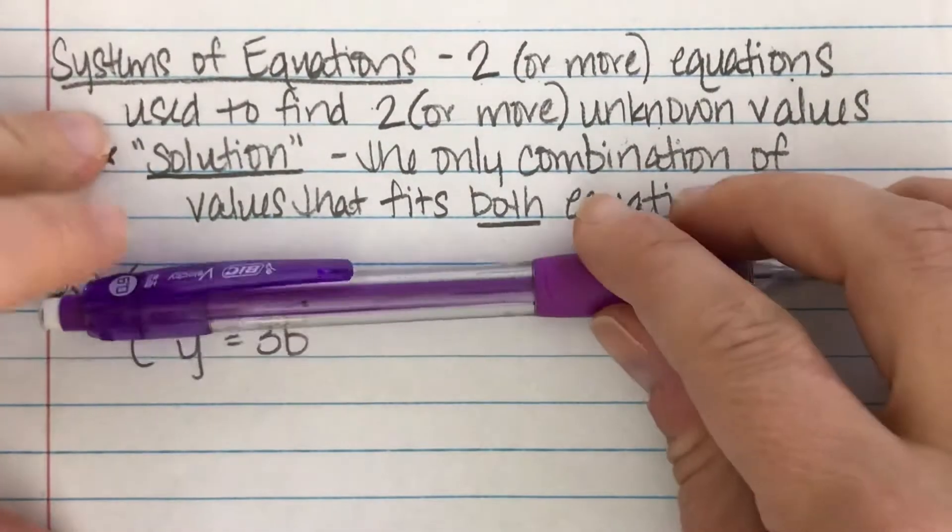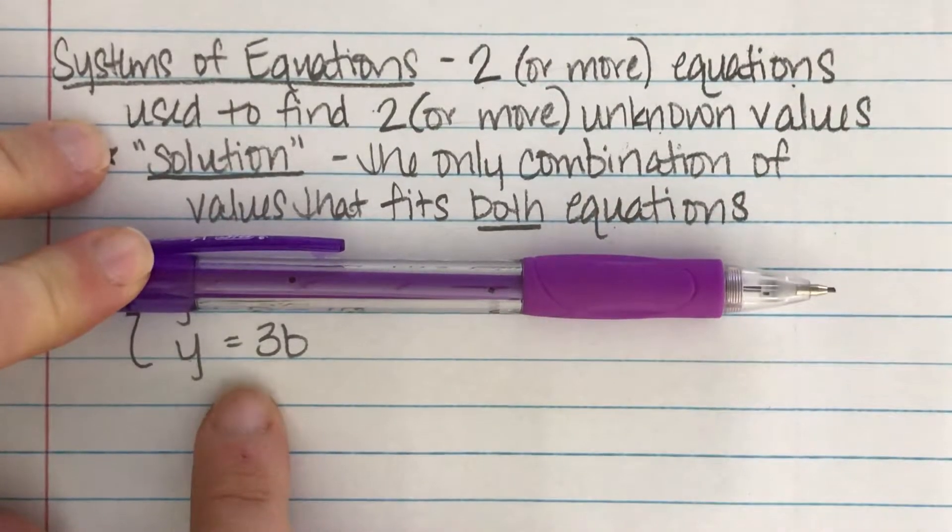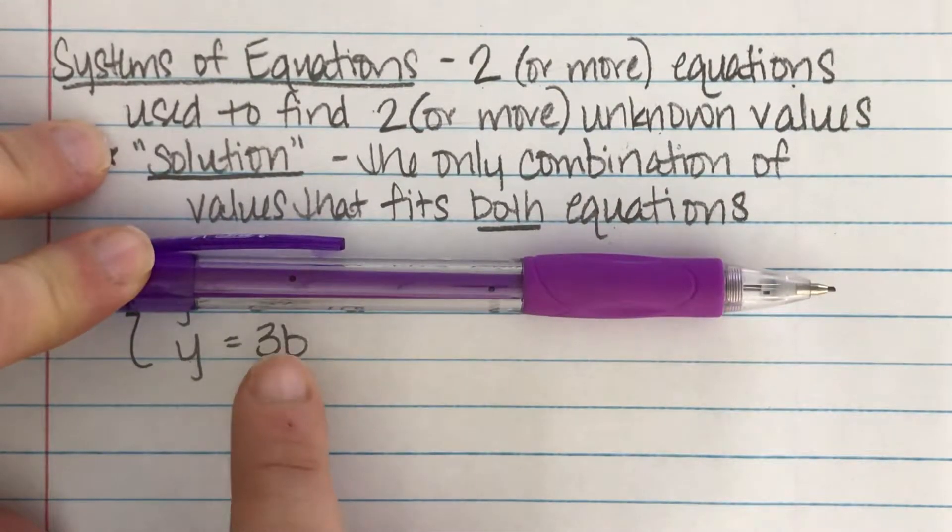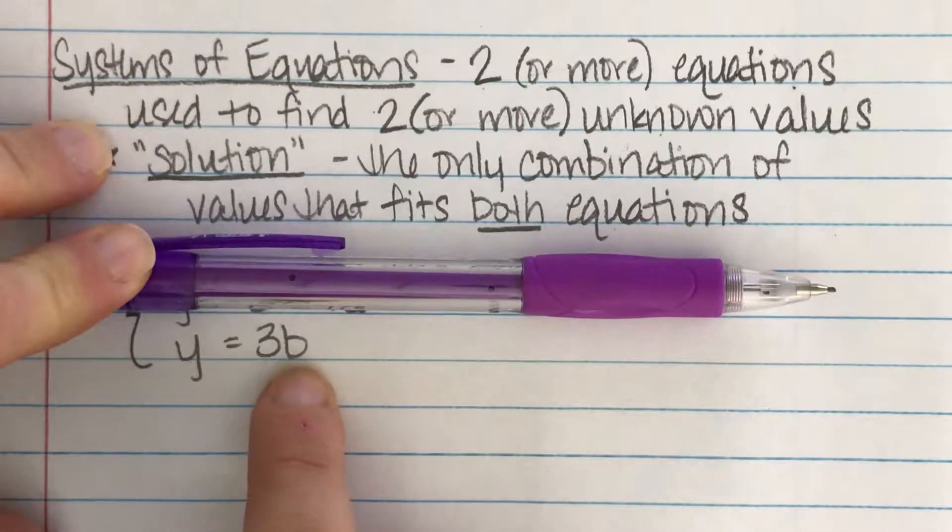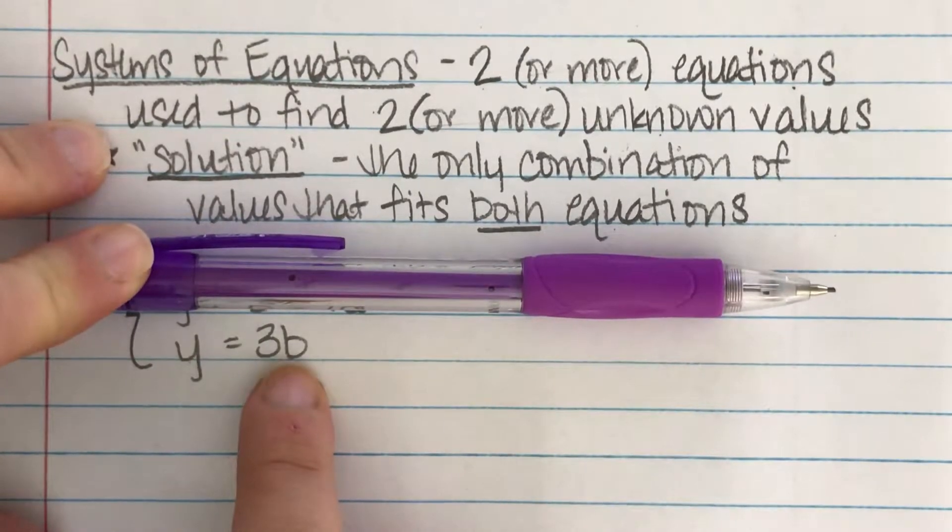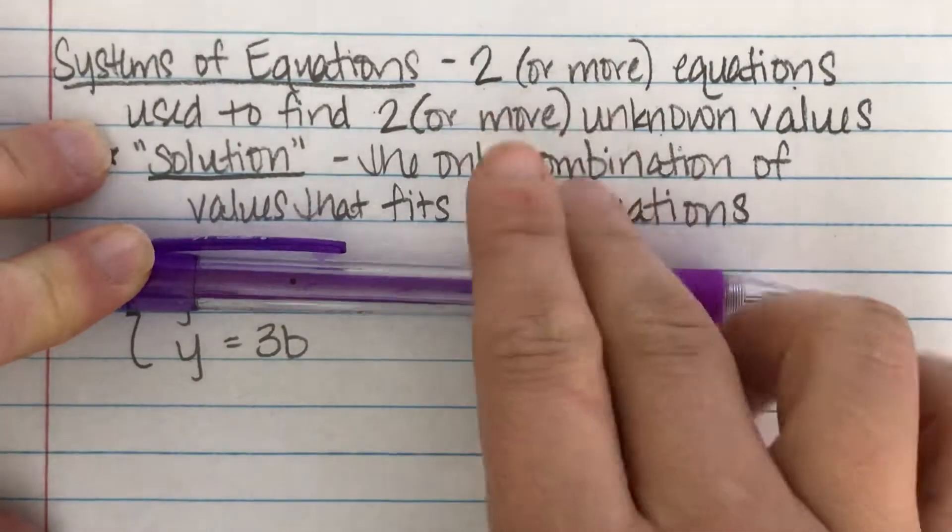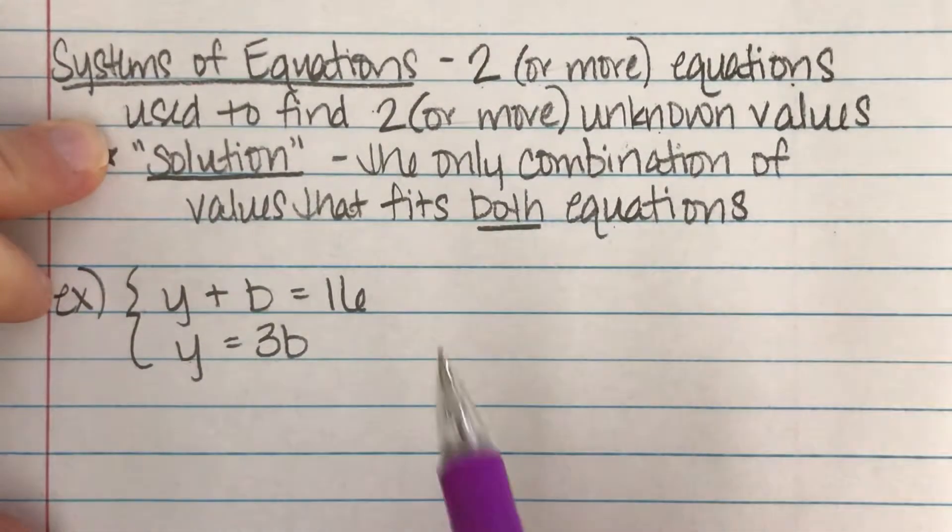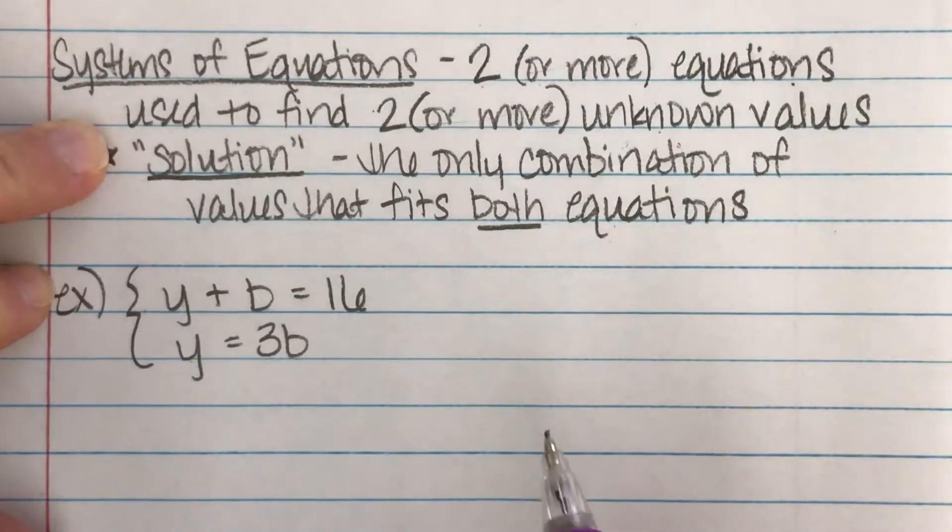Same thing, if the only thing the riddle told you is that the yellow was triple the blue. Well, it could be that there are four blue and 12 yellow. It could be that there's one blue, which would mean there'd have to be three yellow. It could be that there were seven blue and then 21 yellow. You've got to have both pieces of information to narrow this down.